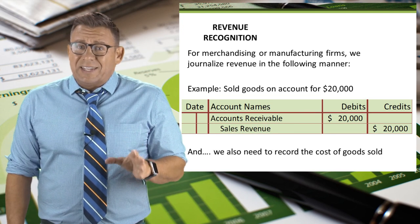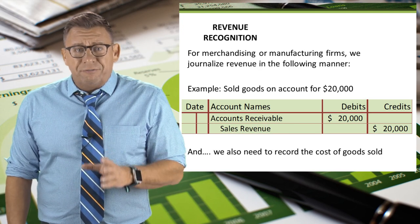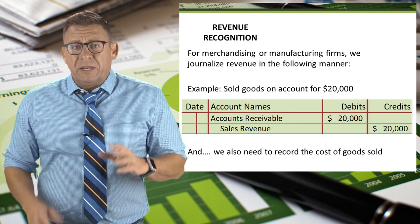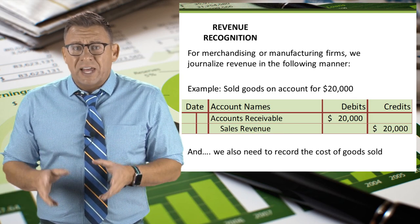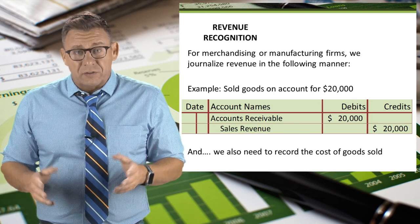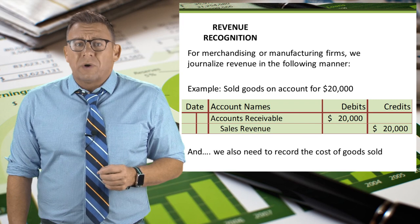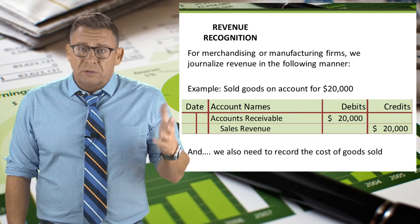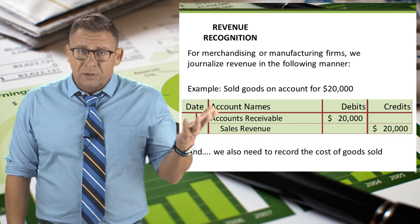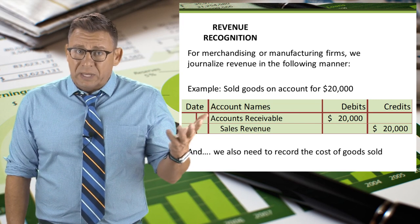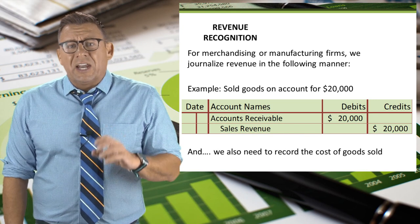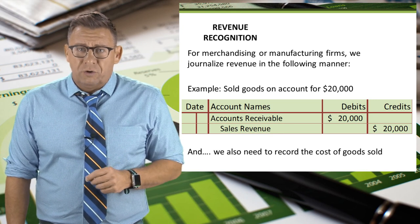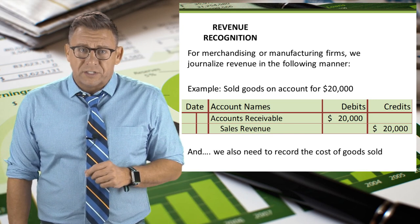For merchandising or manufacturing firms — meaning firms that sell goods rather than services — we record revenue by debiting accounts receivable (or cash in some cases) and crediting sales revenue for $20,000.